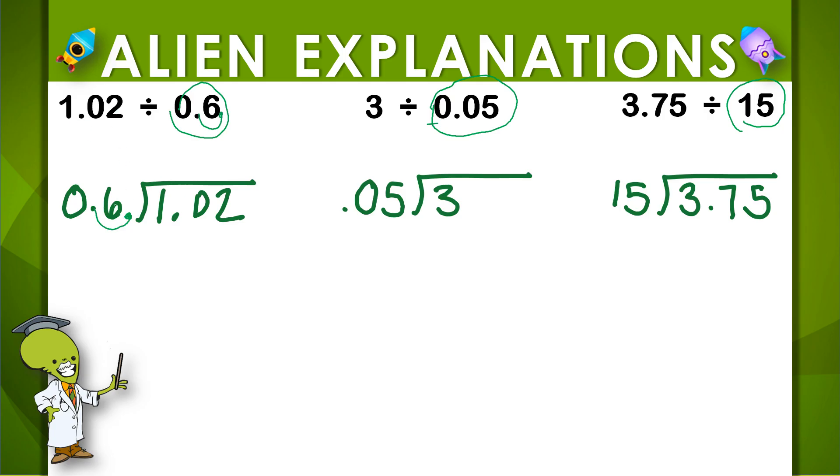So, if I multiply the 6 tenths by 10, I need to multiply 1 and 2 hundredths by 10. And that would make it 10 and 2 tenths. Now, wherever that decimal lands in our dividend, we want to move that decimal point straight up to where it would be located in our quotient.